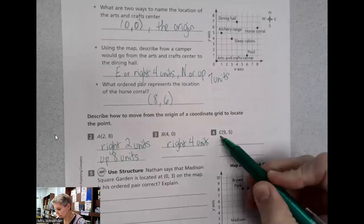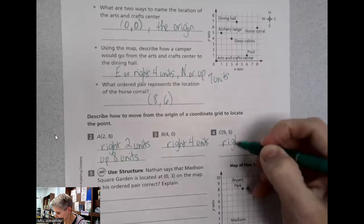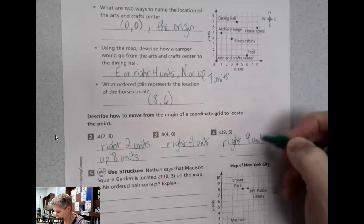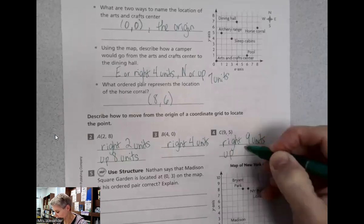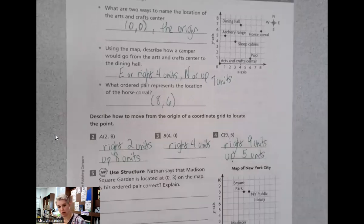If point C is at (9,5), we're going to go right nine units and then up five units. So just a little bit of practice remembering over and up, right and up.